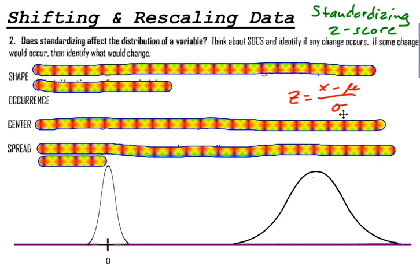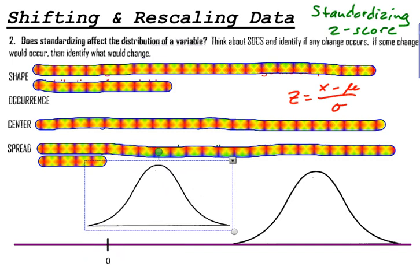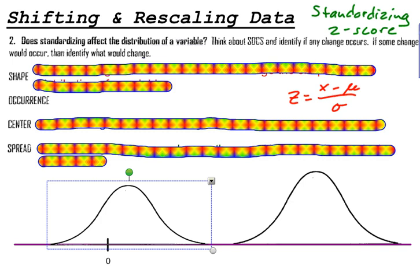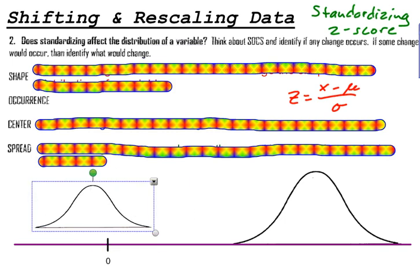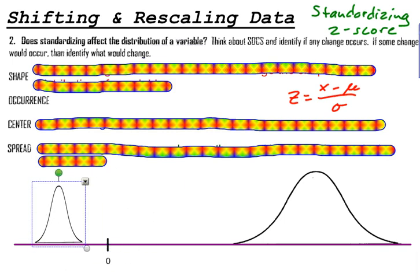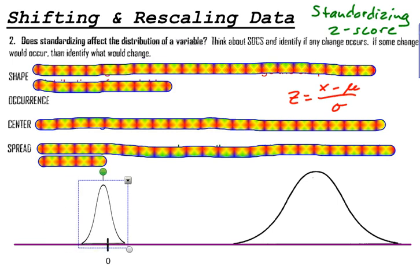Then, when I divide by the standard deviation, I am rescaling the data. I'm changing the shape of it. Maybe it's spreading it out. Maybe it's making it taller. Maybe it's making it less spread out. It just depends. But it is definitely rescaling the data. So if I start with something like this, when I subtract the mean, it shifts it. It shifts the entire distribution, and when I divide by the standard deviation, it's rescaling it in some way.